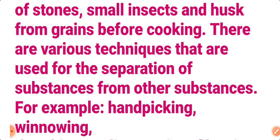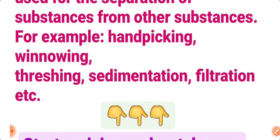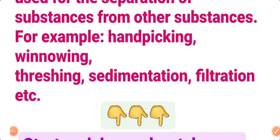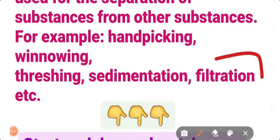There are various techniques used for the separation of substance from other substances. For example: hand picking, winnowing, threshing, sedimentation, and filtration. Yeh saare processes hain jisse alag-alag substances separate kiye jate hain. Is chapter mein hum inke baare mein bahut explain way mein padhenge. So you all get ready, because this chapter is very interesting. Naye naye points padhenge aur dekhenge kaise bade-bade industries mein bahut saare materials ko separate kiya jata hai.